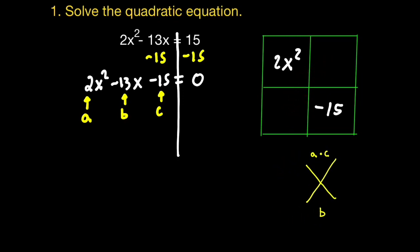Here I'm going to get the value of a multiplied by c: 2 multiplied by negative 15 gives me negative 30. The b value, negative 13, gets recorded on the bottom. Now I need to find two numbers that when multiplied together give me negative 30, but when added give me negative 13. After some trial and error, the values are negative 15 and positive 2. Negative 15 times 2 gives negative 30, and negative 15 plus 2 gives negative 13. Keep in mind that when using the box method, these two terms have x's, so we have negative 15x and 2x. I'll put negative 15x on the bottom and 2x on the top.